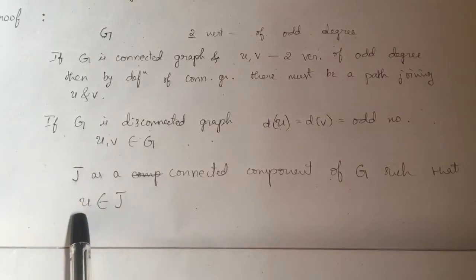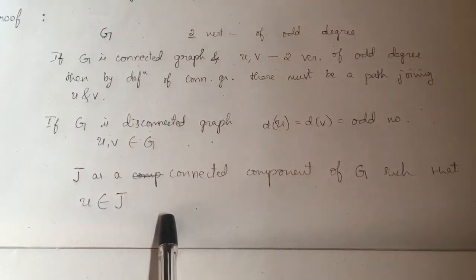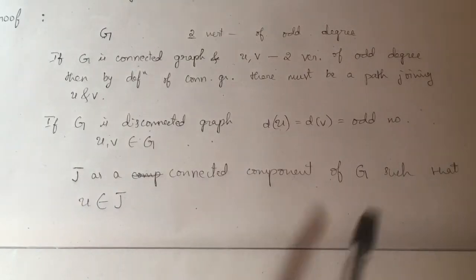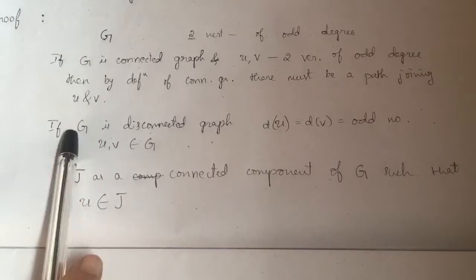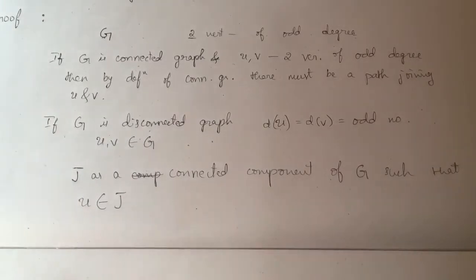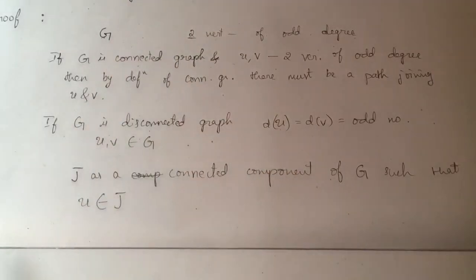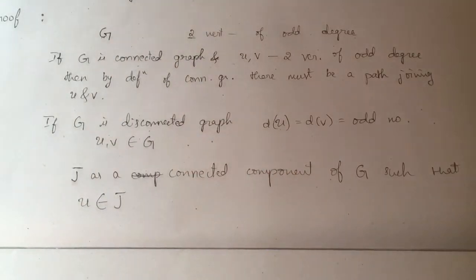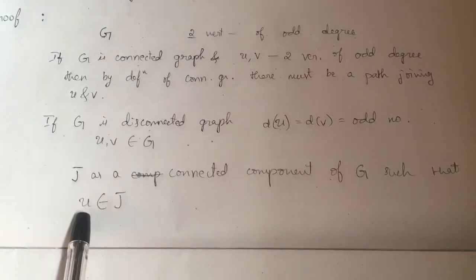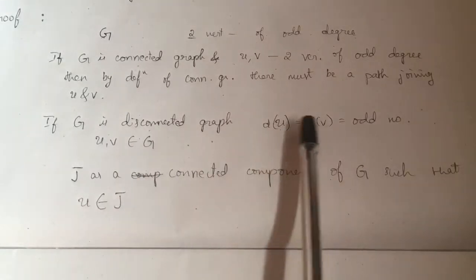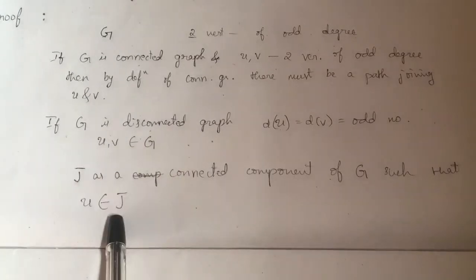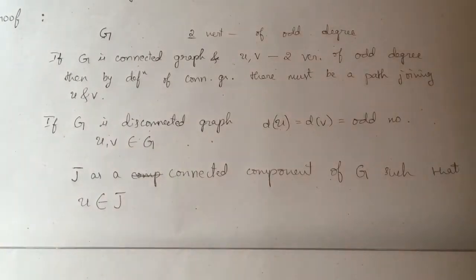So again, if there is one such vertex, then the total number of odd degree vertices in G will be 3, which is not possible since it is already mentioned that the graph has exactly two vertices of odd degree. Therefore, I cannot consider one more odd degree vertex outside J. I will consider V to be in J itself.